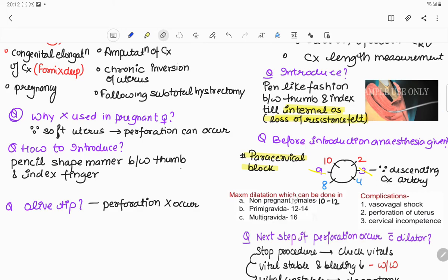So maximum dilation which can be done in non-pregnant female is 10 to 12, primigravida is 12 to 14, and multipara is 16.